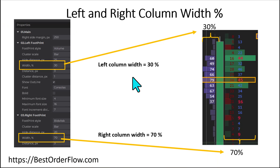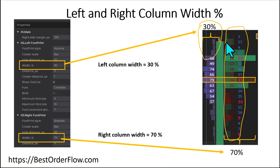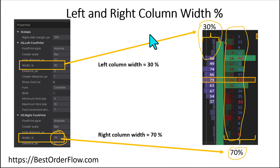Because this is a three-column footprint, we may designate how much space to provide for the volume on the left side of the candle bar and for bid, ask, or delta on the right side of the candle bar. Currently, the right side is set to 70 percent and the left side for volume is 30 percent.